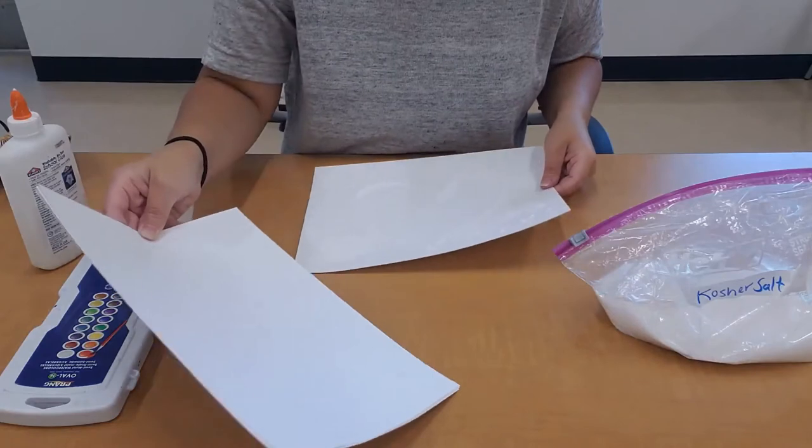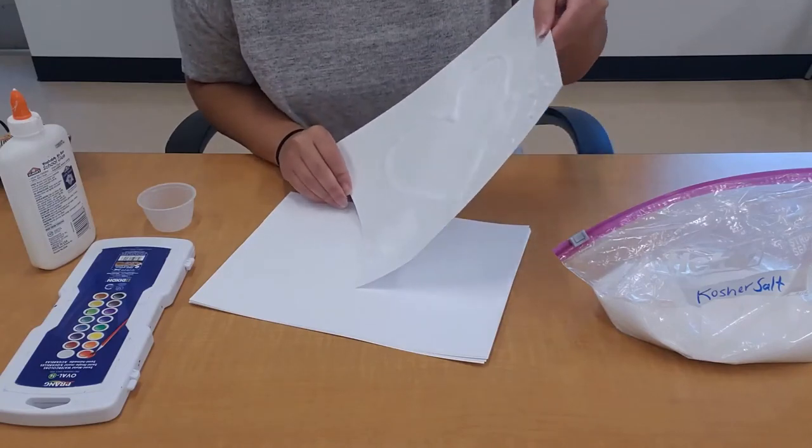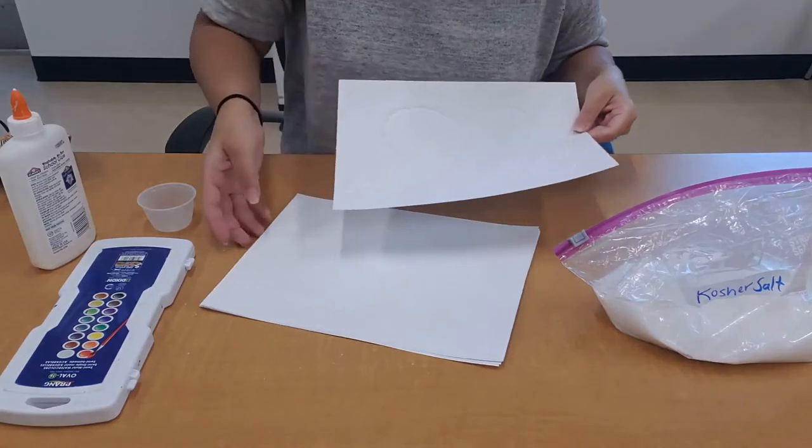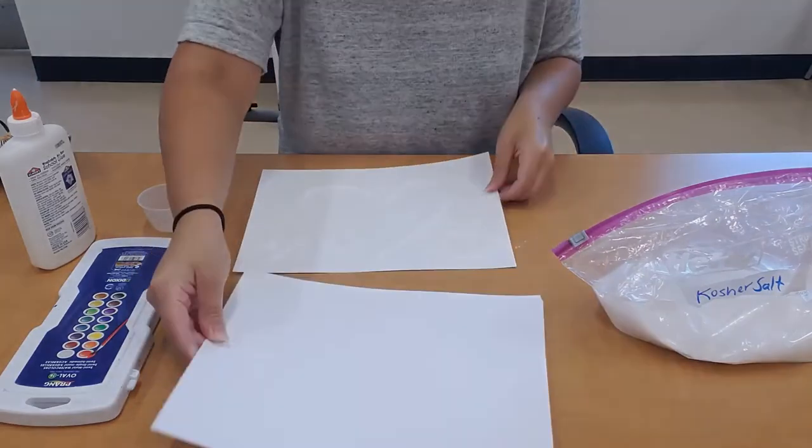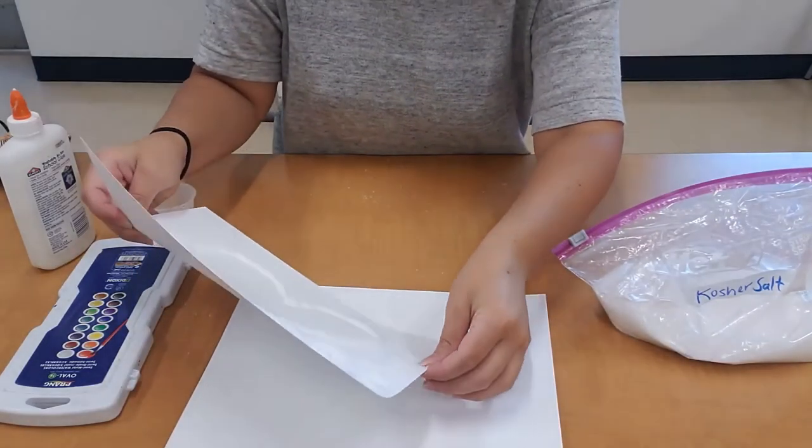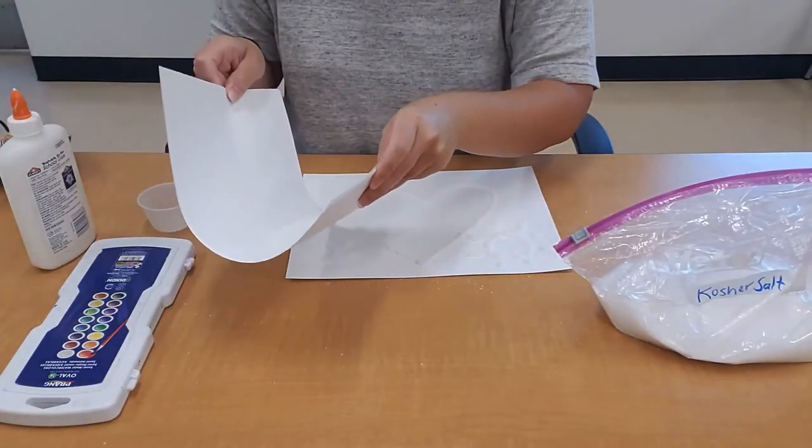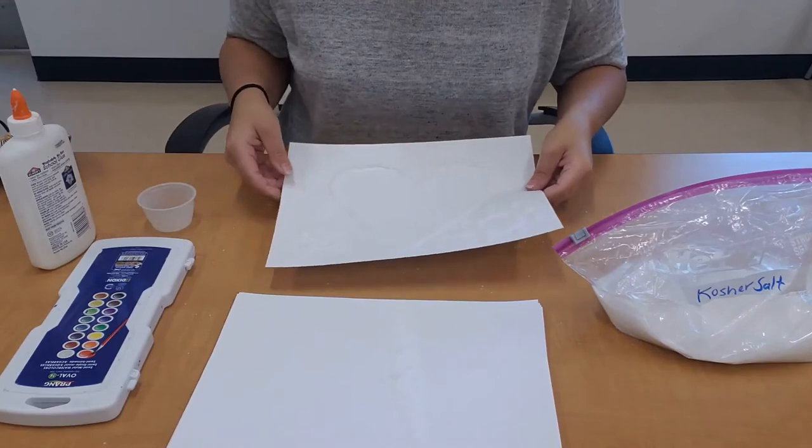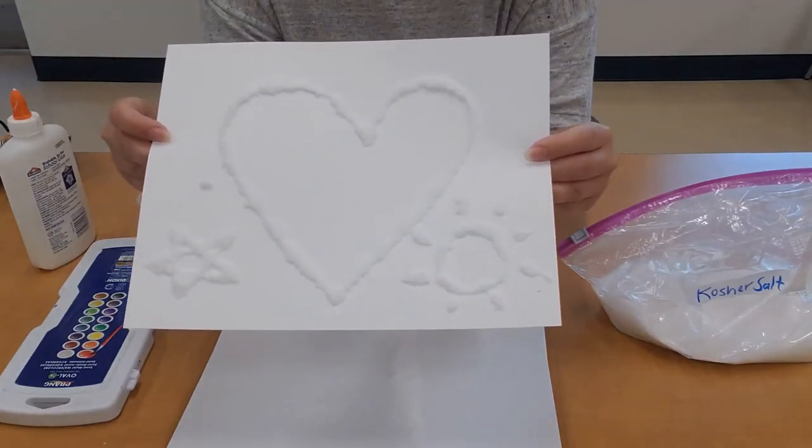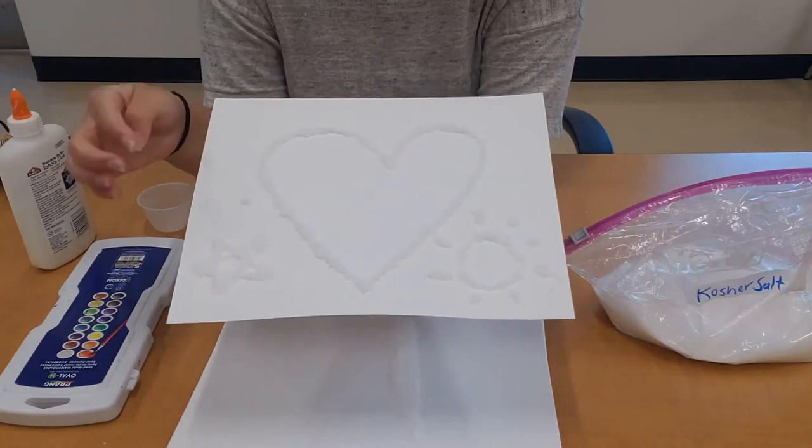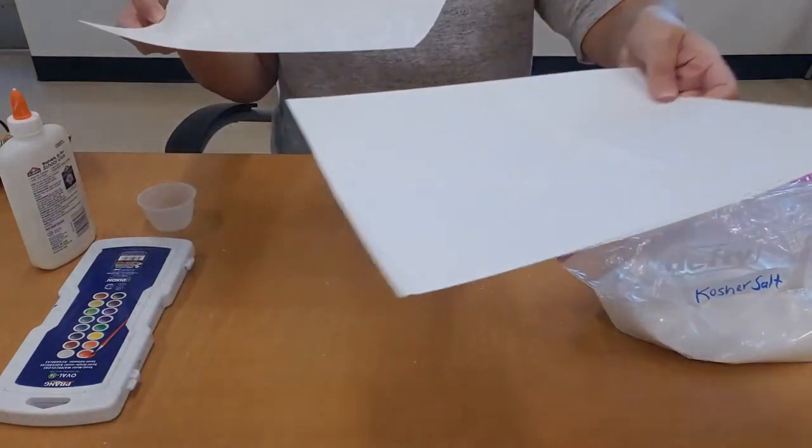I do recommend having another piece of paper for the extra salt, but if you don't, you can just dump the salt straight into the trash bin. Now you want to gently tap the extra salt away. And now you can see that my painting has a little edge. That's the salt and the glue right there. You want to put the salt away. You won't need that anymore.